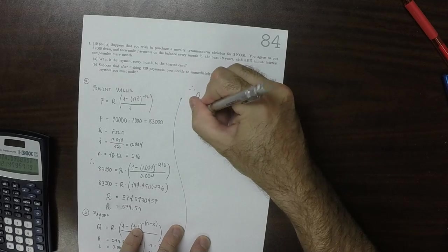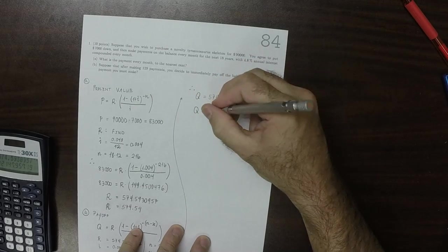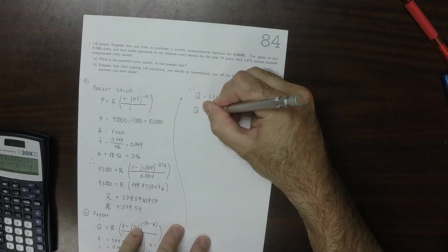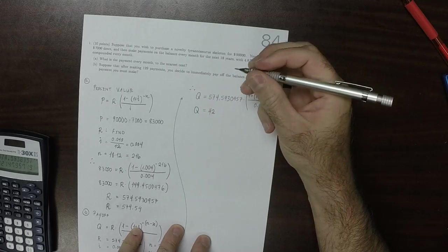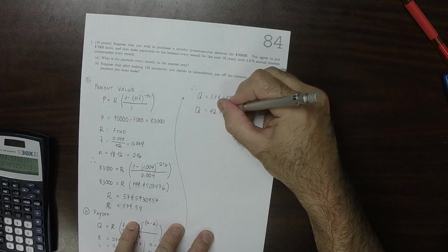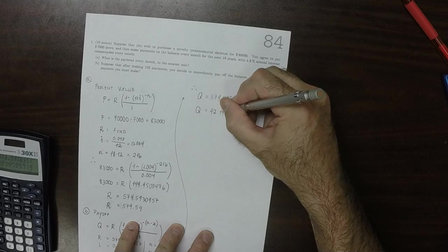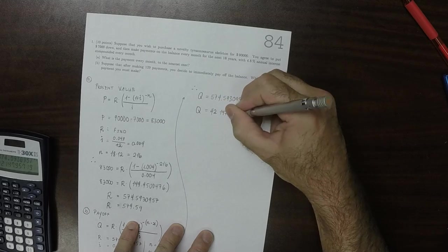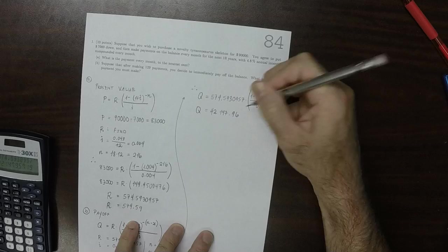Okay, so then the calculator says $42,147.96 to the nearest cent.